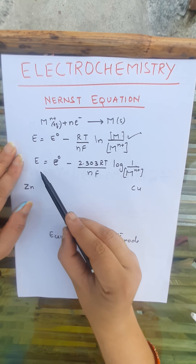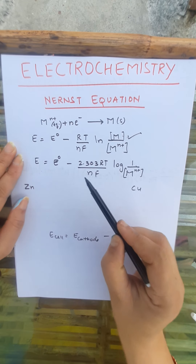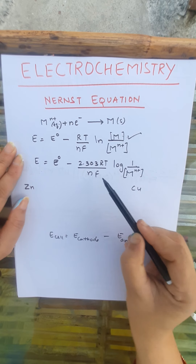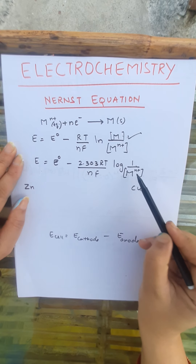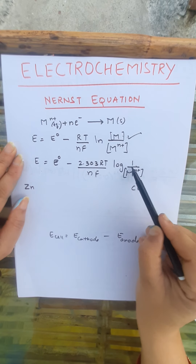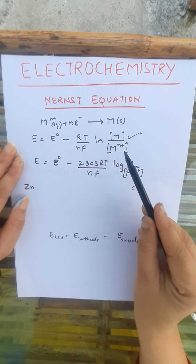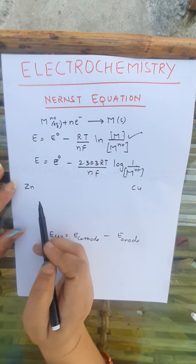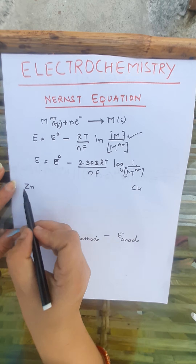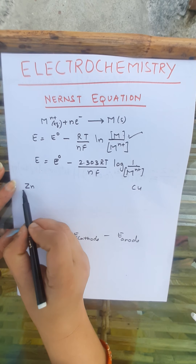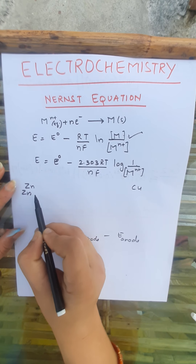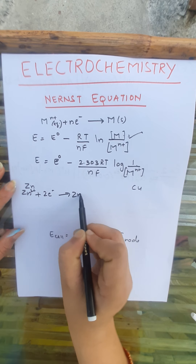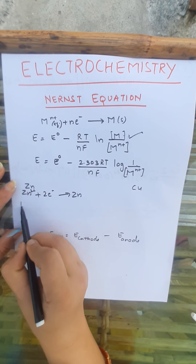Here R is the gas constant, T is the temperature, N is the number of electrons, and F is Faraday's constant. Because M is a solid or pure state, we take its concentration to be 1. If we convert to log base 10, the equation becomes: E = E° minus 2.303RT/NF times log(1/[M^(N+)]).